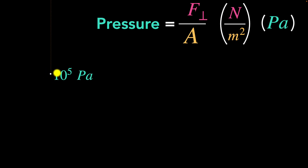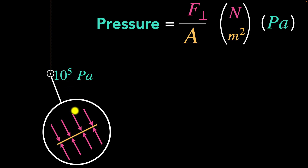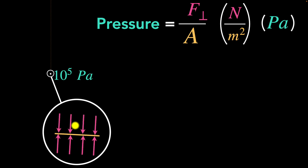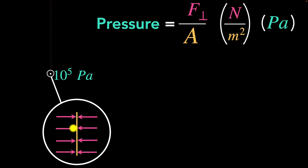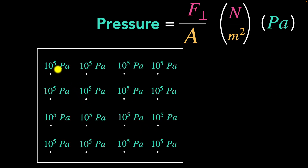Should we assign a direction to this pressure? Not really, because all I need is a number. What this number tells us is that if you zoom in and have any area, there will always be forces perpendicular to that area exerted by the fluid, and that force per area will be 10 to the power of 5 pascals — valid from any direction. It doesn't matter how your area is oriented. So all I need is a number; I don't need a direction. Therefore, pressure is a scalar quantity. And because the number of air molecules bumping per square meter and their speeds are pretty much the same everywhere, the pressure is the same everywhere — at least locally.